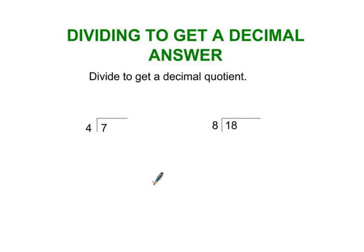Sometimes you're going to be asked to do a division problem where there's a remainder, but the problem calls for you to get a decimal answer or a decimal quotient and not a remainder. And here's how you do problems like that.